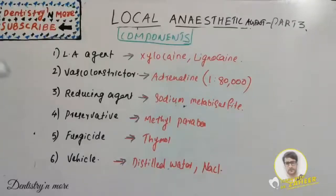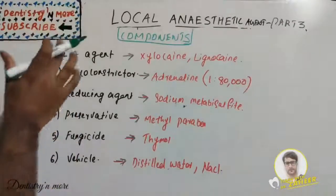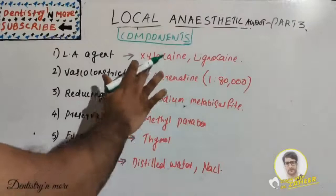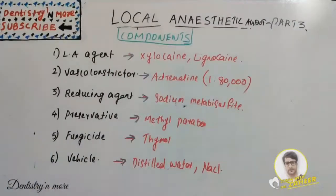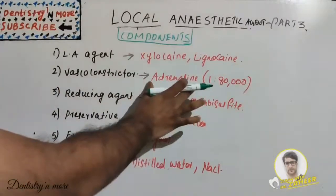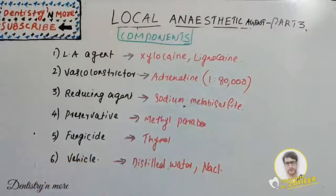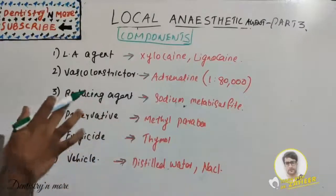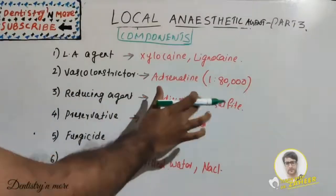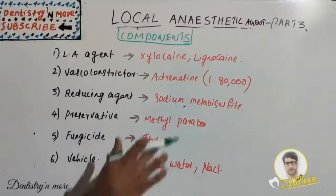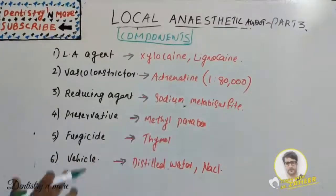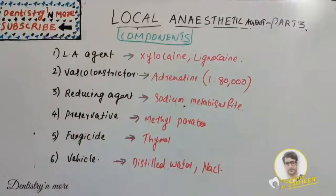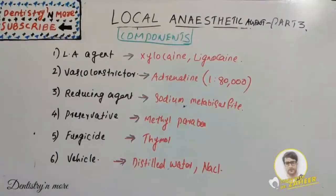We'll start straight away. The basic local anesthetic agent can be xylocaine or lignocaine. The second one is vasoconstrictor — the commonly used one is adrenaline, in a dilution of 1:80,000. The third one is reducing agent, which is sodium metabisulfate. The preservative is methylparaben, the fungicide is thymol, and the vehicle can be either distilled water or sodium chloride.